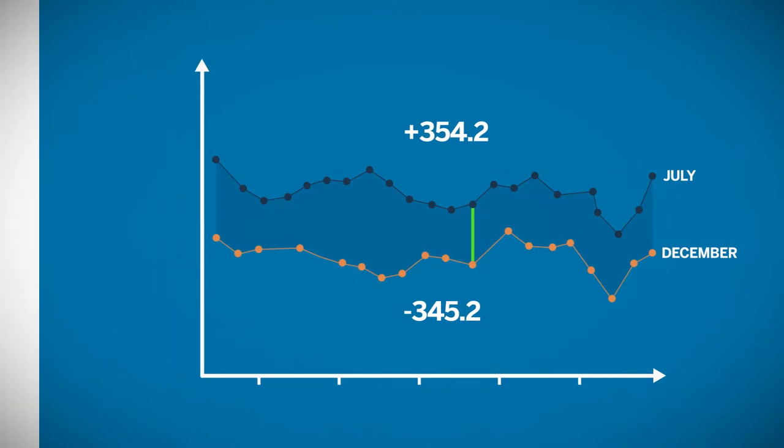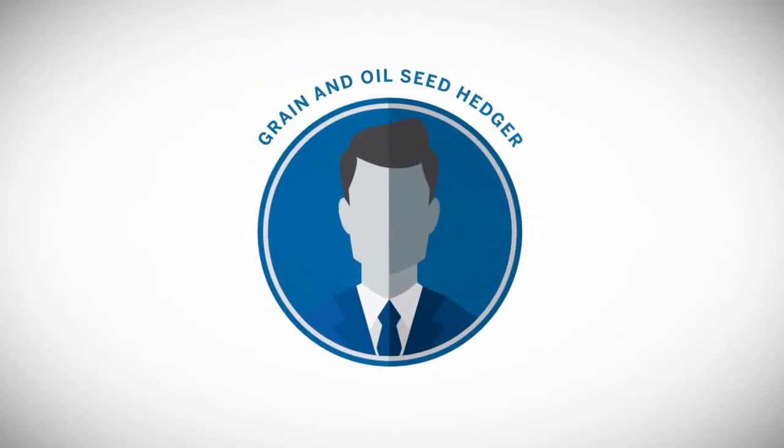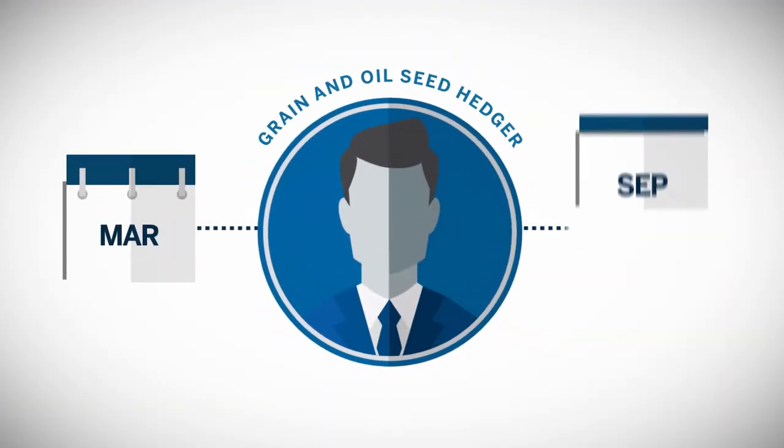Calendar spreads are also used by grain and oilseed hedgers to roll a futures position from one delivery month to the next.